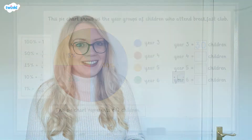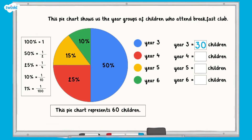Let's check your answers now. The red sector represents 25%, or one quarter. One quarter of 60 equals 15, so 15 of the children are in Year 4.